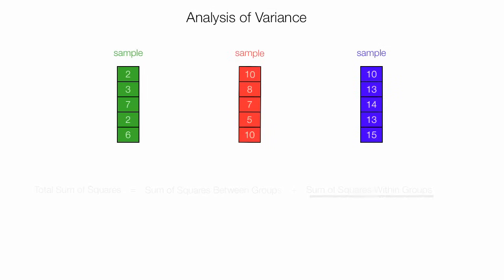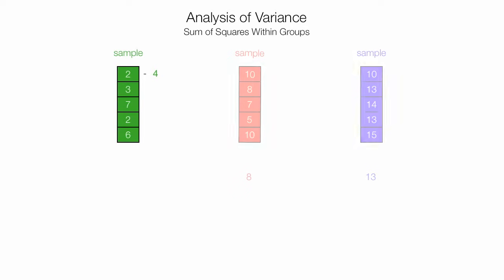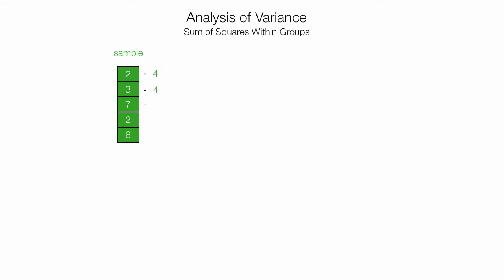This is my first calculation. I calculate the mean of each of the samples — the green, red, and blue means. Then I take each individual observation: 2 minus 4 (that 4 is the mean), 3 minus 4, 7 minus 4, and I'll fill in the rest. This gives negative 2, negative 1, positive 3, negative 2, and positive 2.